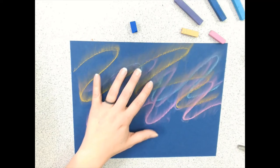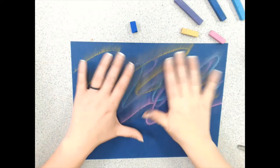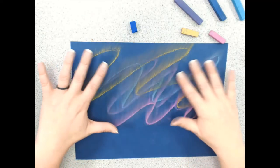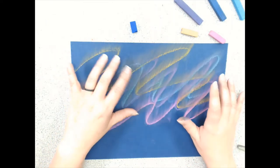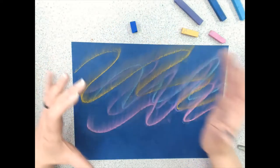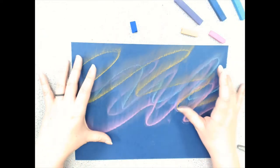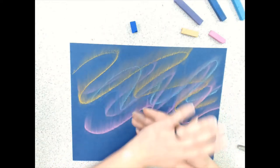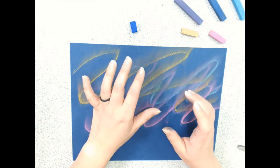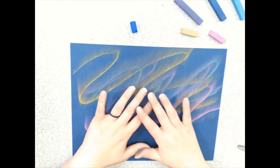Okay, so I have finished smudging all my chalk lines, and I've created this beautiful blending color on our paper. And this actually looks pretty close to what the aurora borealis looks like in real life, which you can see in the pictures on our s'more page.